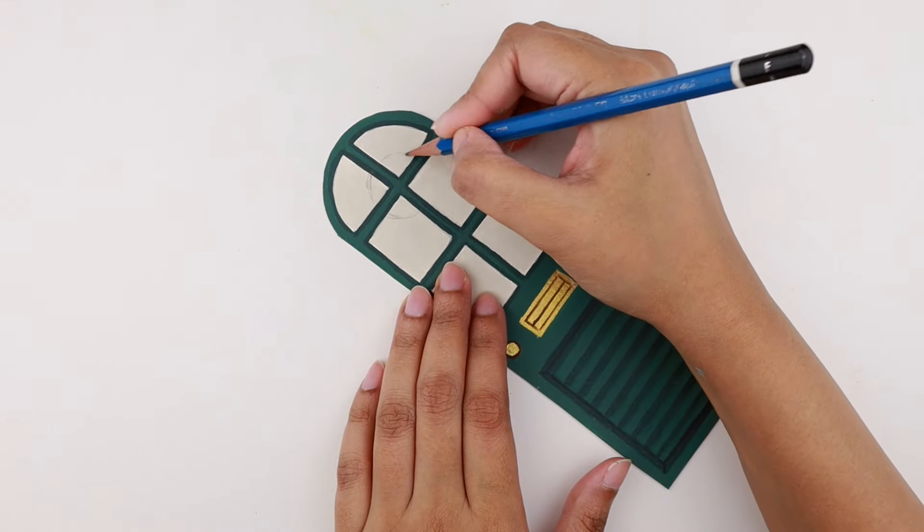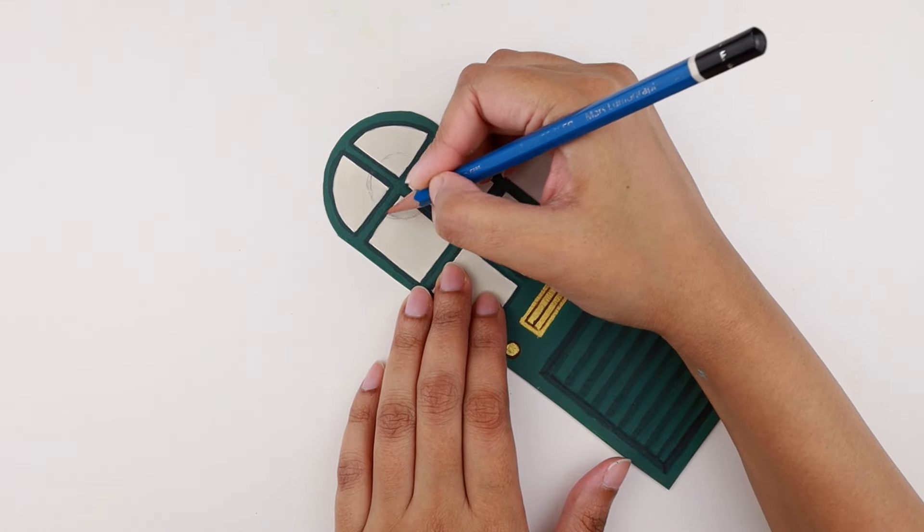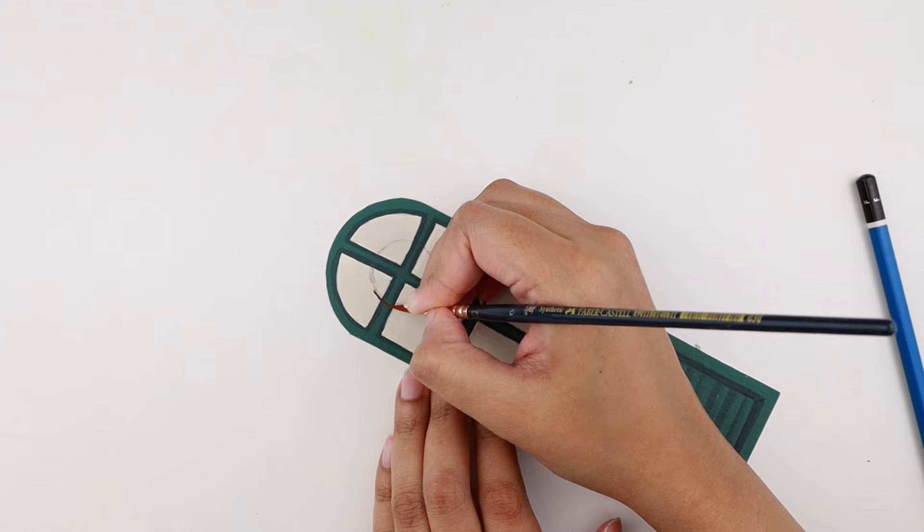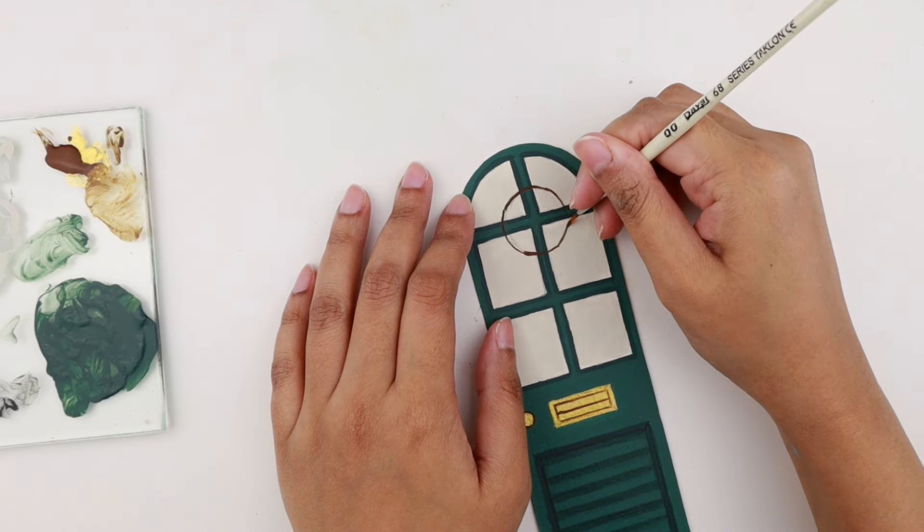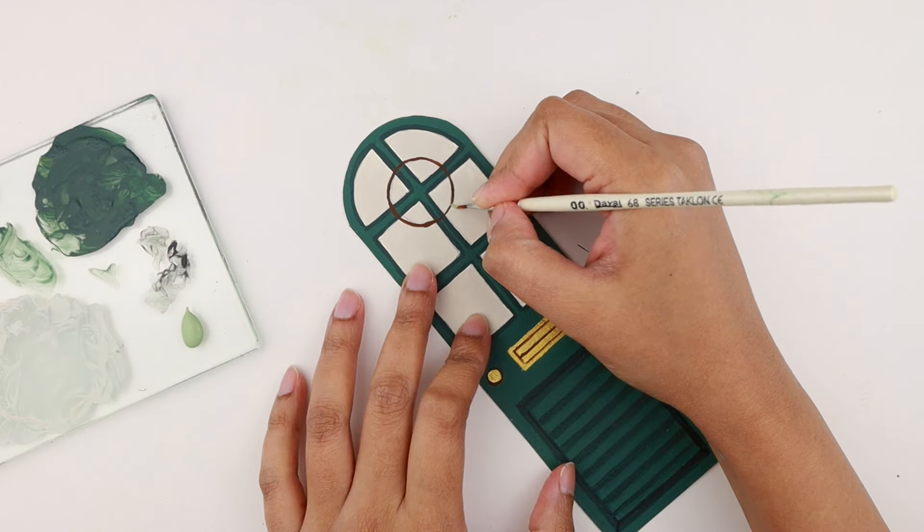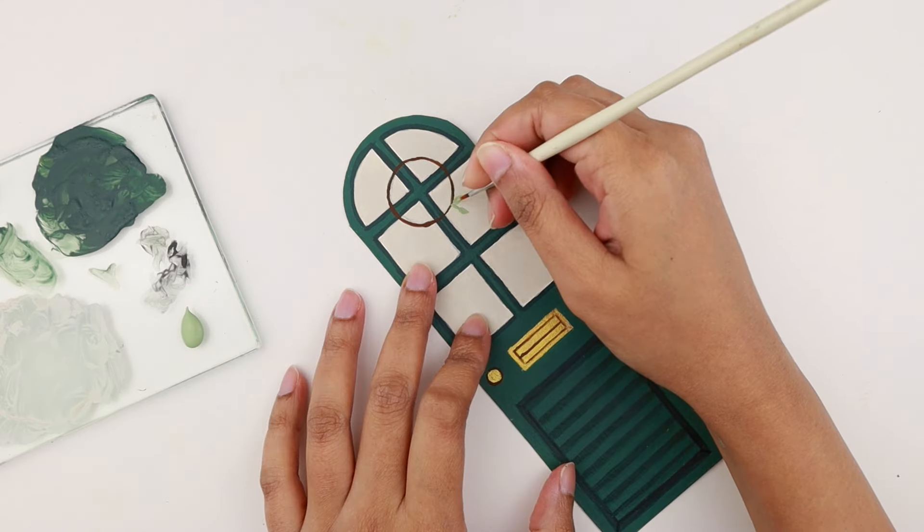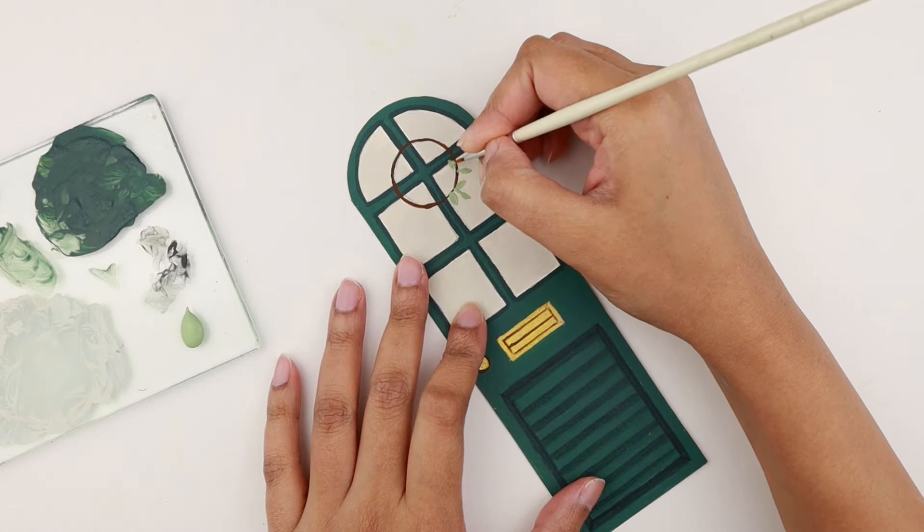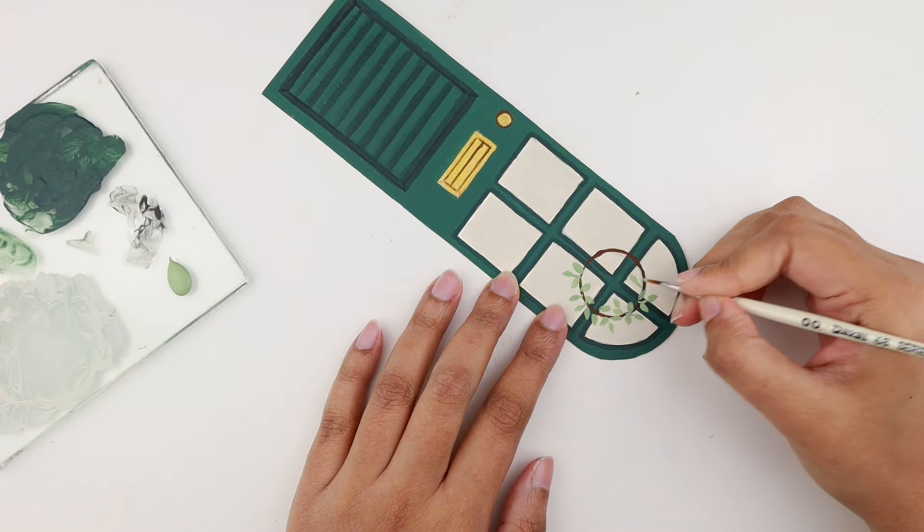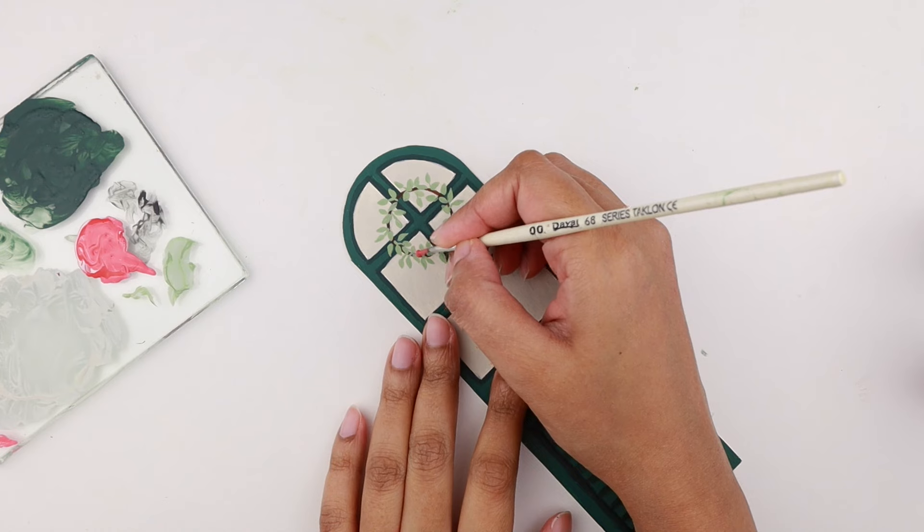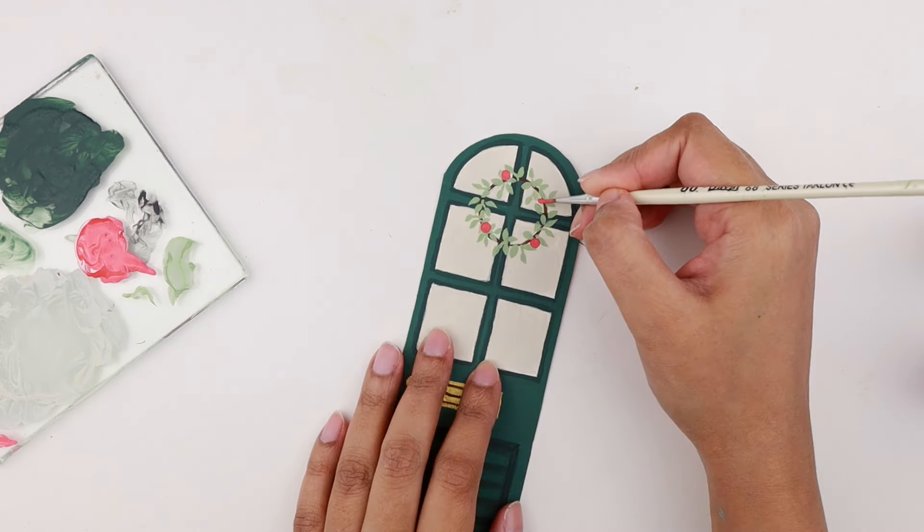I'm also planning to add a wreath, so I'm roughly sketching out a circle. Then I'm going in with a dark brown acrylic paint and painting over the circle. This is going to be the frame of the wreath. Using a sage green paint, I'm painting some tiny leaves all the way around. Then we're going to use three to four different colors to paint some roses on it.